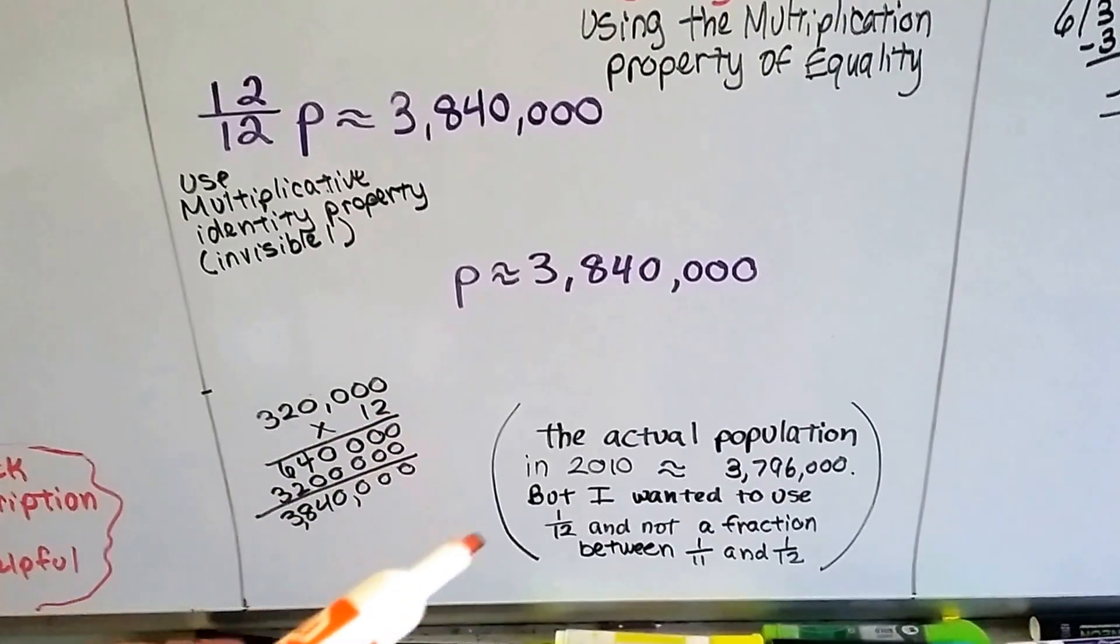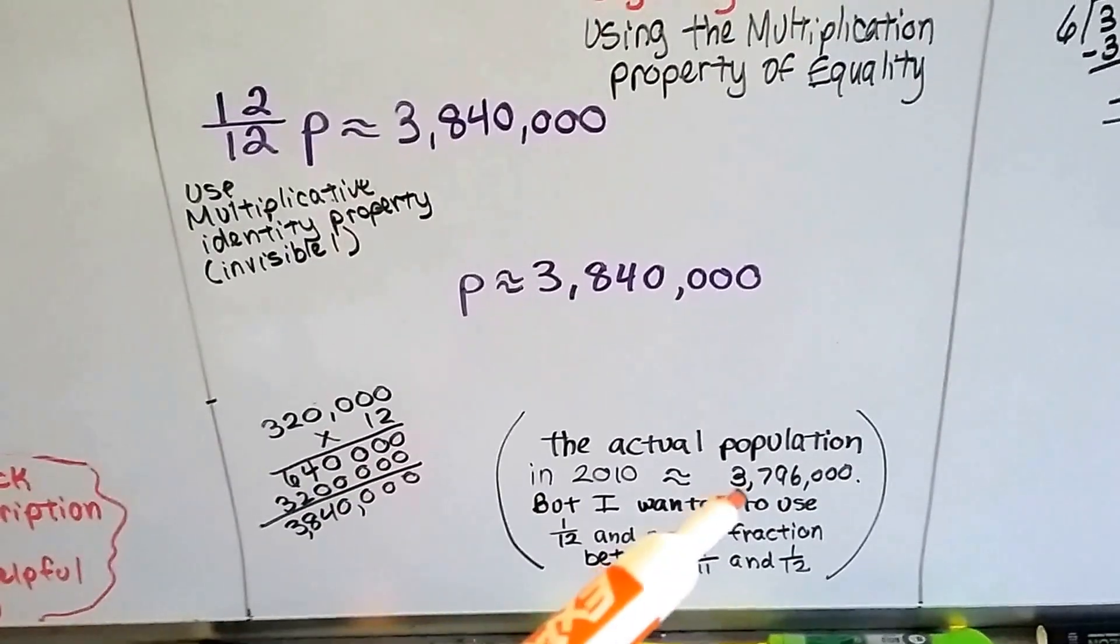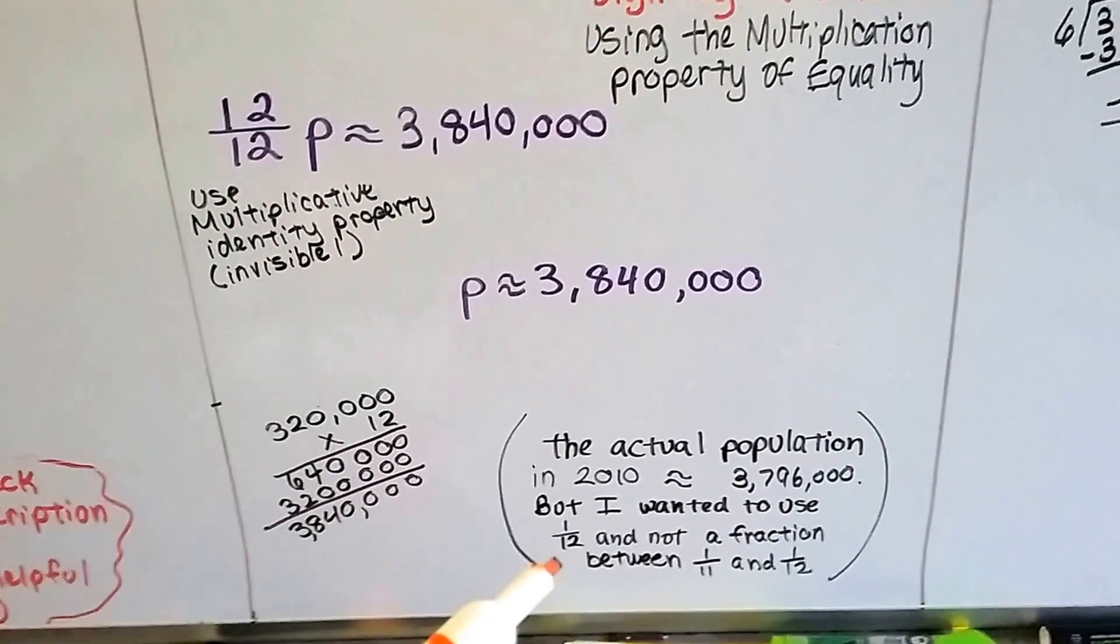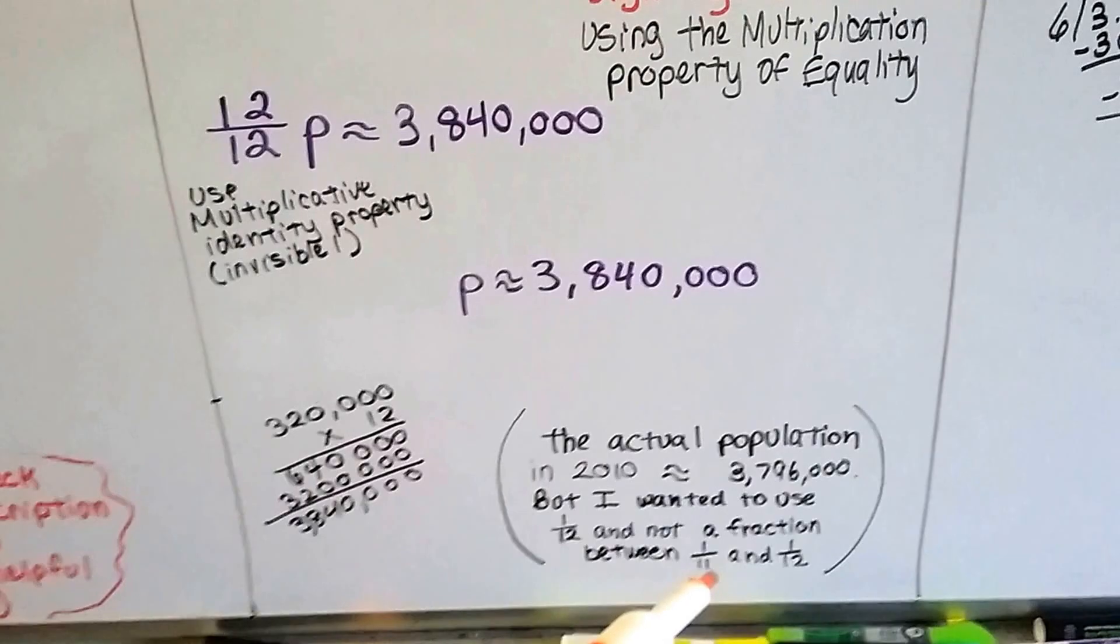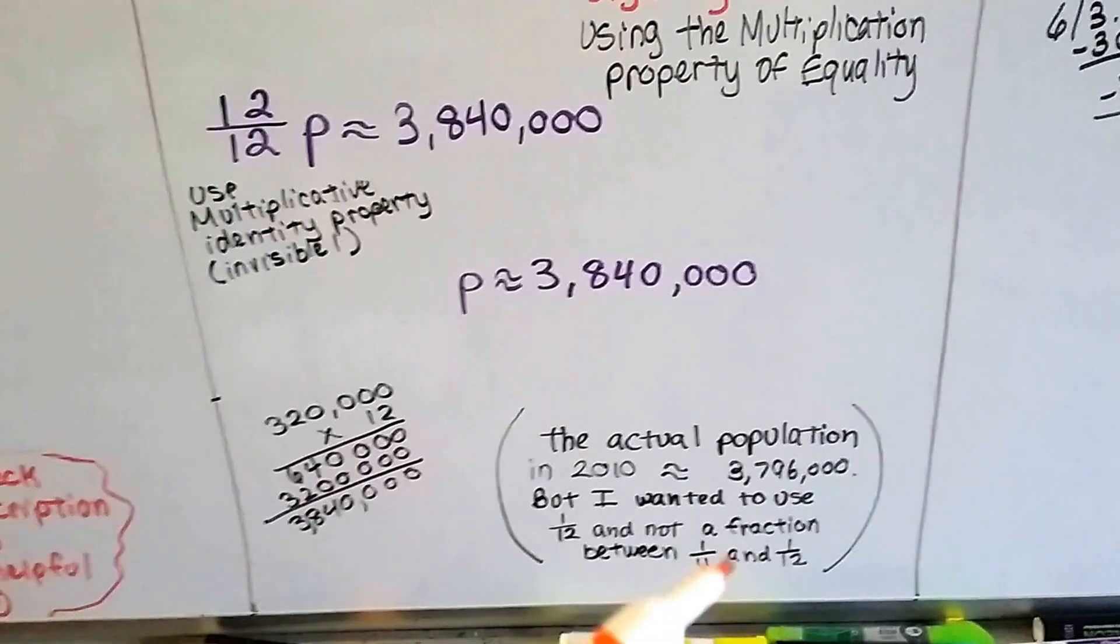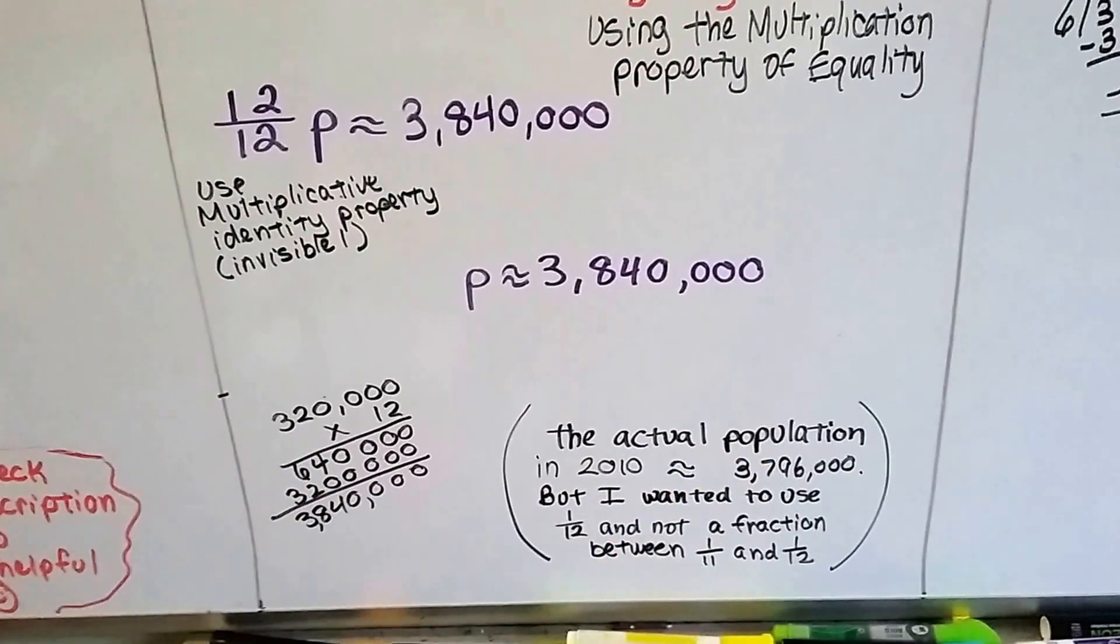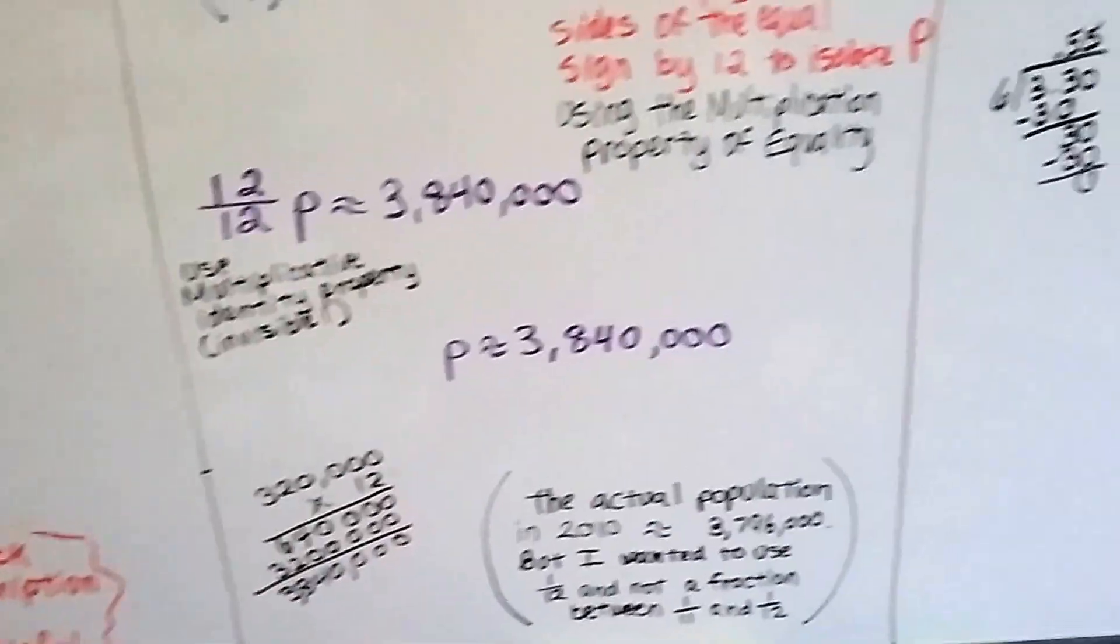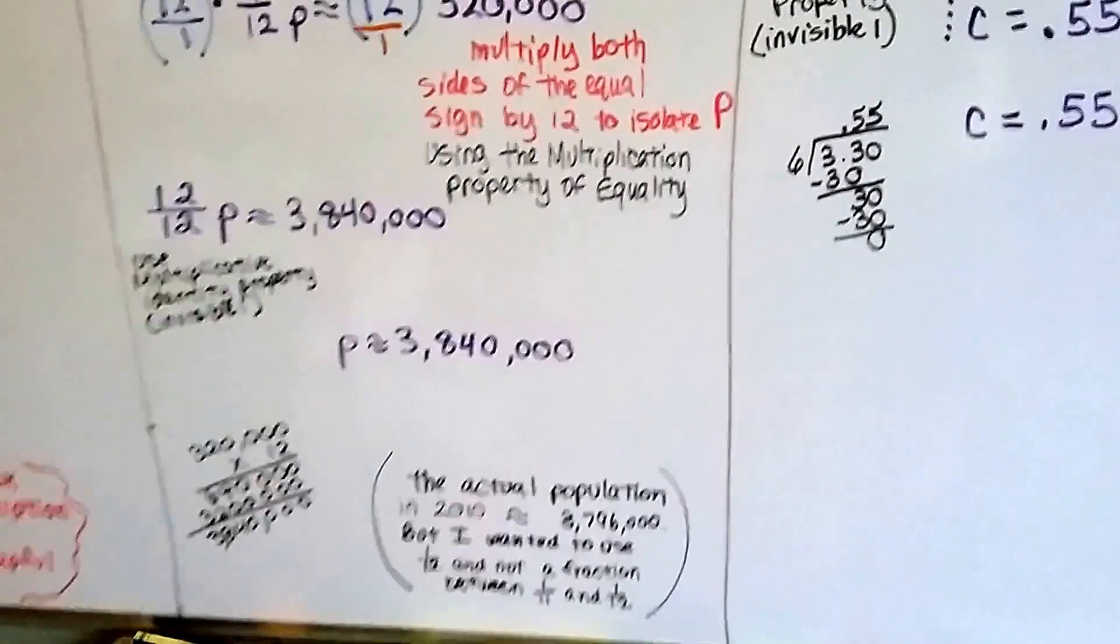Now, the actual population in 2010 was 3,796,000. But I wanted to use one-twelfth as a fraction and not choose one between one-eleventh and one-twelfth, which would have gotten us to the actual one, the closer approximation. I figured one-twelfth was easier for our example.